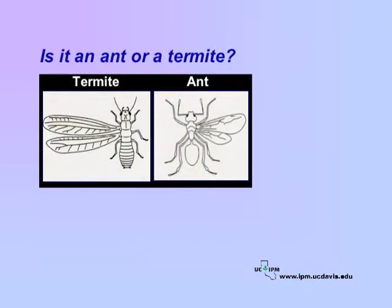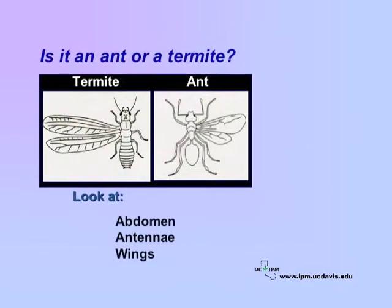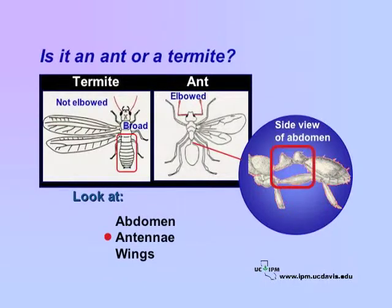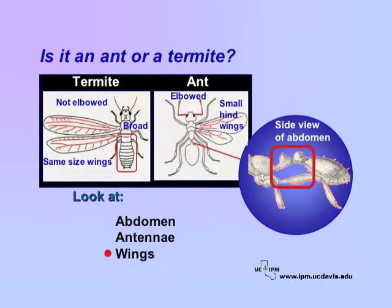Ants are sometimes mistaken for termites, especially in their winged form. Winged forms of both pests leave their nests in warm weather to mate and establish new colonies. To see if your pest is an ant or termite, look at the abdomen, antennae, and wings. The first part of the ant abdomen consists of one or two nodes depending upon species, and the abdomen is constricted where it joins the thorax, giving an appearance of a thin waist. The termite's abdomen is broad with no apparent waist. Ants have elbowed antennae, while the antennae of termites are never elbowed. On winged forms, the ant's hind wings are smaller than its forewings, while termite front and hind wings are the same size. Ant wings have few veins, while termite wings have several small veins.